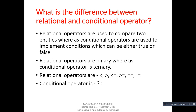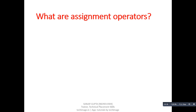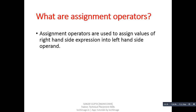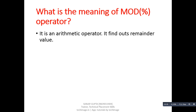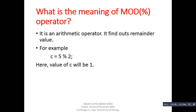Next question: what are assignment operators? Assignment operators are used to assign the value of the right-hand side expression into the left-hand side operand. For example, = is known as an assignment operator. Next question: what is the meaning of the mod operator? It is an arithmetic operator that finds out the remainder value. For example, in c = 5 % 2, the value of c will be 1, which is the remainder value of this expression.